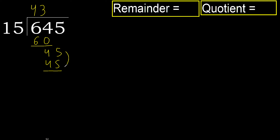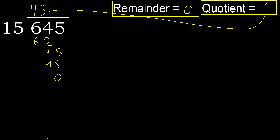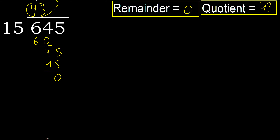Subtract 0, next. There is no more number, therefore finish it. 645 divided by 15 is 43.